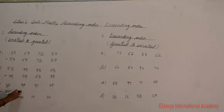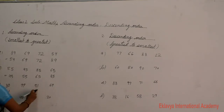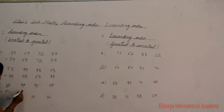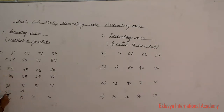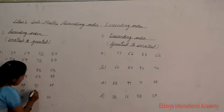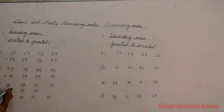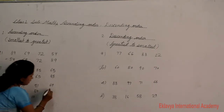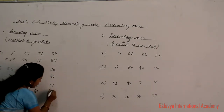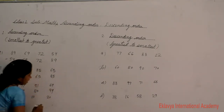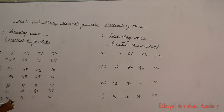After 51, the next bigger number is 69. Then 69 is followed by 80. And 80 is followed by 99. That completes the ascending order.